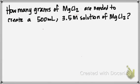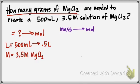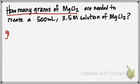This last example for this session is a little more complicated, and these are the ones that normally give a few of you headaches. So when you look at it, it's how many grams of magnesium chloride are needed to create a 500 milliliter, 3.5 molar solution of magnesium chloride. Okay. So again, we start with what we're given.